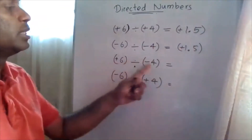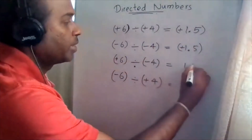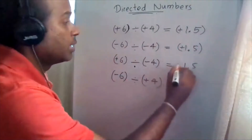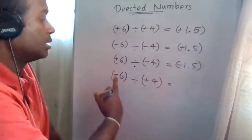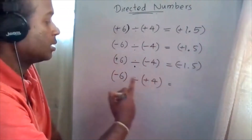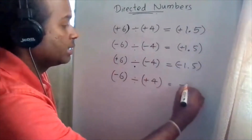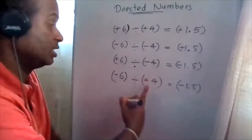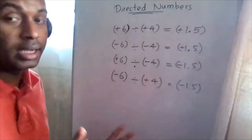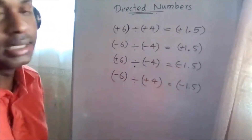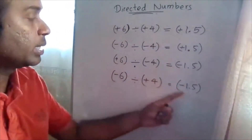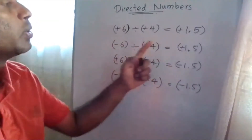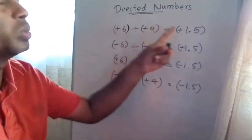Positive six divided by negative four equals negative 1.5 — they are in different signs, so the answer is negative. Negative six divided by positive four equals negative 1.5 — different signs give a negative result. Same signs always give a positive result; different signs always give a negative result.